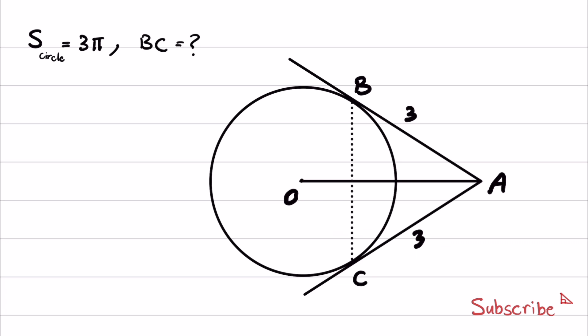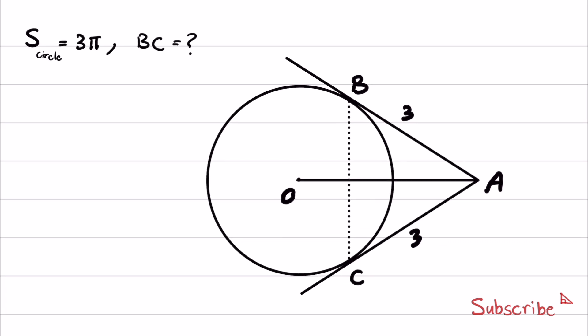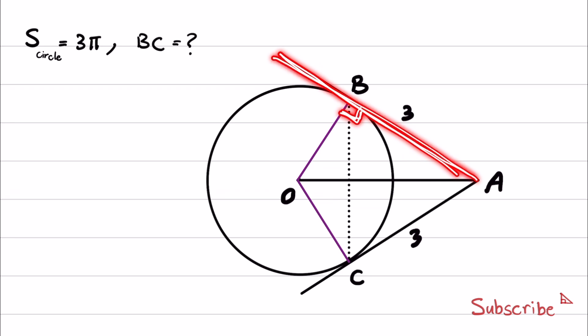The first step in the solution is to draw the radius of this circle. If I draw a radius that connects the center to intersection point B and intersection point C, we have right triangles at the intersection points.